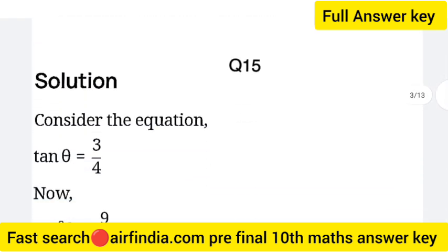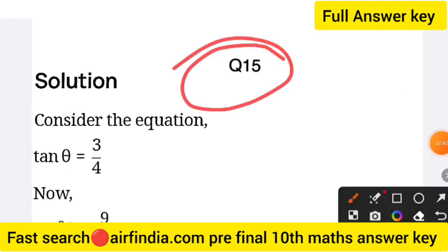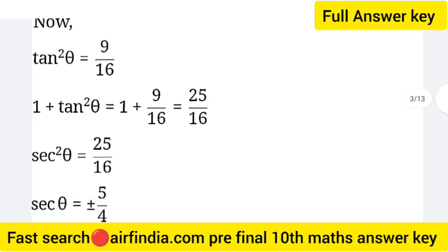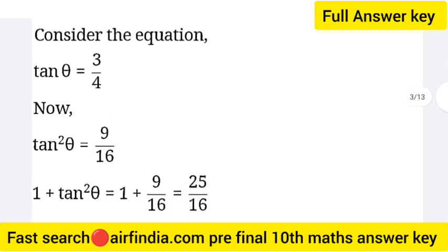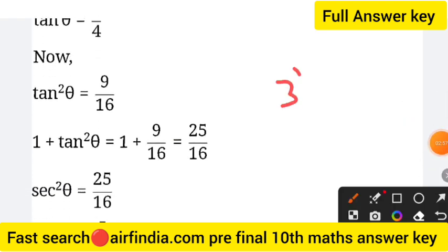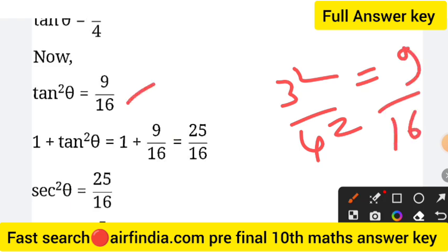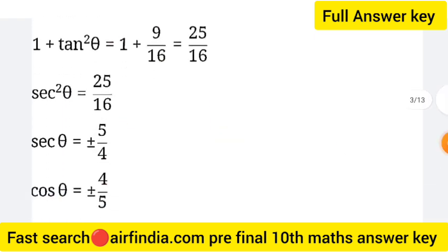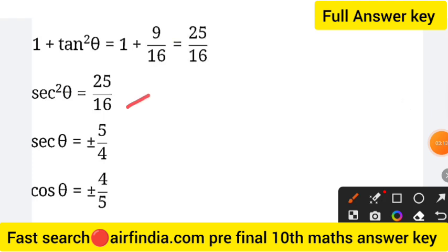Question 15: given that tan θ equals 3 by 4, find sec θ. So tan squared θ equals 9 by 16, that is 3 squared over 4 squared. Now 1 plus tan squared θ equals 1 plus 9 upon 16, which equals 25 upon 16. And since 1 plus tan squared θ equals sec squared θ, therefore sec θ equals 5 by 4.